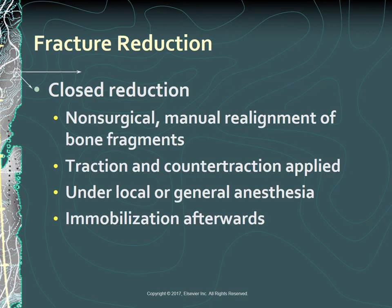With a closed reduction, this is non-surgical manual realignment of bone fragments to their previous anatomic position. Traction and counter-traction are manually applied to the bone fragments to restore position, length, and alignment. Closed reductions are usually performed while the patient is under local or general anesthesia. Traction, casting, external fixation, splints, or braces may be used after the reduction to maintain alignment and immobilize the injured part until healing occurs.